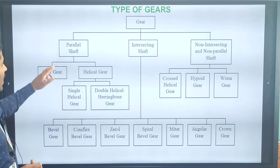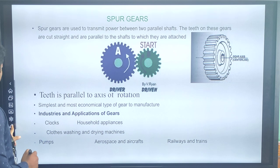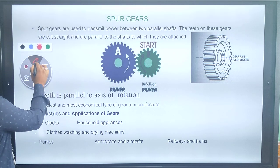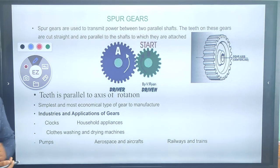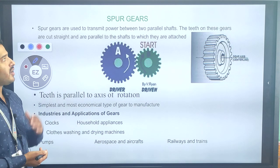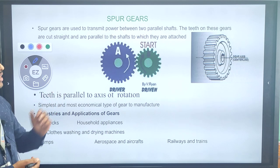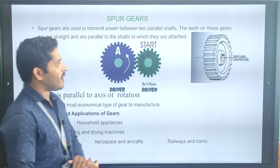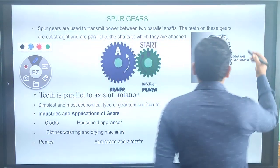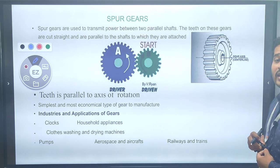The spur gear is one type of mechanical device. It is mainly used to transmit the power between two shafts. The teeth on this gear are cut straight and parallel to the shaft to which they are attached. Spur gears are used to transmit power from one shaft to another shaft.